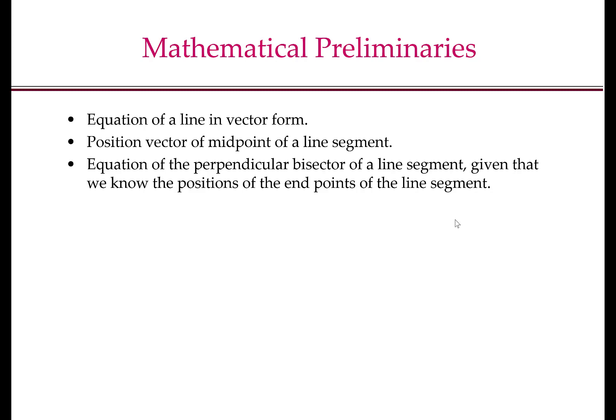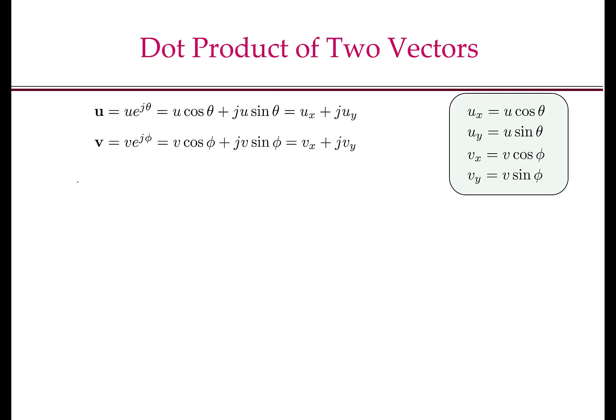In particular, we will look at the following: how to write the equation of a line in vector form, how to obtain the position vector of the midpoint of a line segment, and how to find the equation of the perpendicular bisector of a line segment, given that we know the positions of the endpoints of the line segment. To do all of this, we will need to know how to write the dot product of two vectors, especially when they are given in complex number exponential form as we have been using throughout this course.